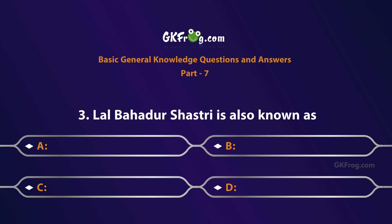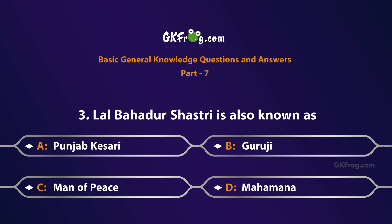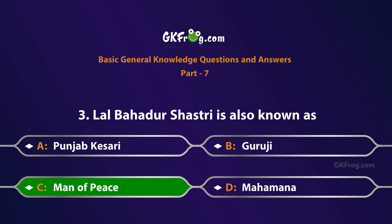Lal Bahadur Shastri is also known as: A. Punjab Kesari, B. Guruji, C. Man of Peace, D. Mahamana. Correct answer is C. Man of Peace.